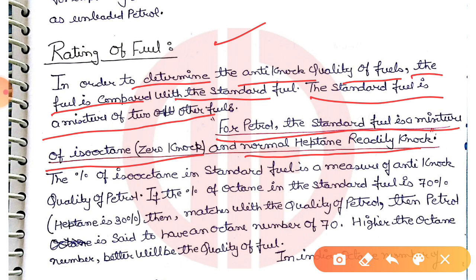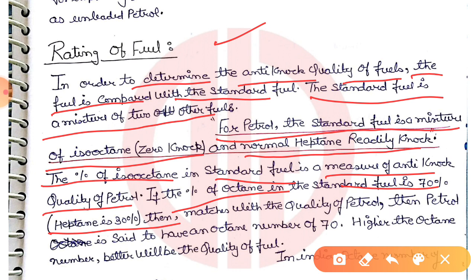The percentage of isooctane in the standard fuel mixture defines the anti-knock quality of petrol. The percentage of isooctane in the standard fuel is called the octane number. For example, if we have 70% isooctane and 30% heptane in the standard fuel mixture, and it matches the quality of the petrol being tested, then that petrol is said to have an octane number of 70.